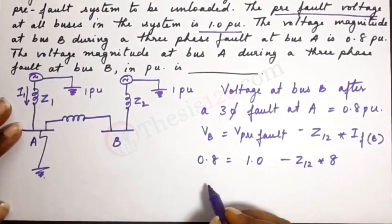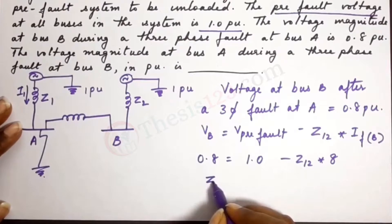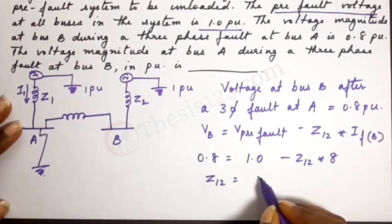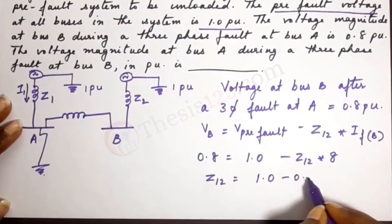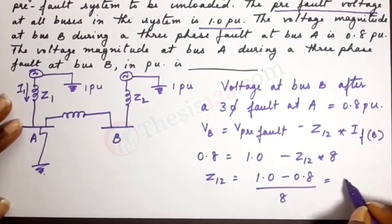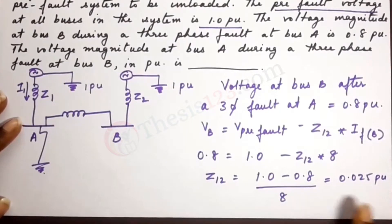So if we solve this and find the corresponding value for Z12, Z12 would be 1.0 minus 0.8 divided by 8, and that gives us 0.025 PU.